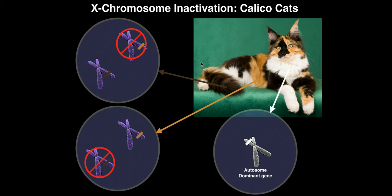In the tail region, for example, the X chromosome carrying the orange allele may be randomly inactivated, so the brown allele is expressed throughout that region. In other regions — like the abdomen or face — the X chromosome carrying the brown allele is inactivated instead, so the orange allele is expressed there. This random X inactivation across different regions of the body produces the seemingly random arrangement of orange and brown patches characteristic of calico cats.